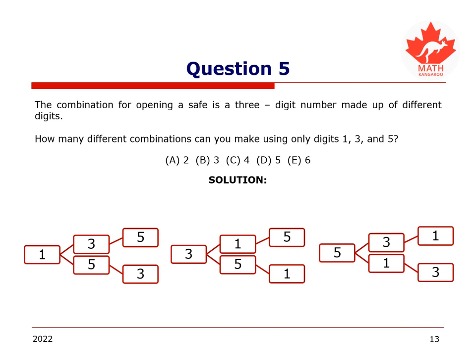In consequence, the total number is 3 times 2, which is equal to 6. Hence, the solution is E, 6 combinations.